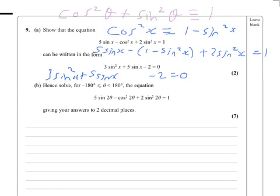So what we really do is we solve this equation with x replaced by 2 theta. So let's see what we get: we get 3 sine squared 2 theta plus 5 sine 2 theta minus 2 equals 0.